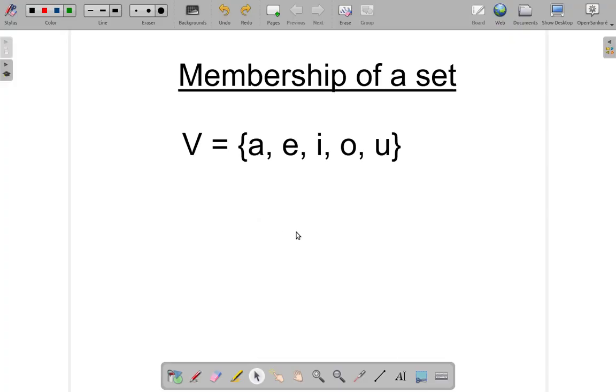Membership of a set. We have V representing the vowels of the alphabet, and this is set V. It contains A, E, I, O, U.